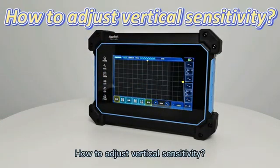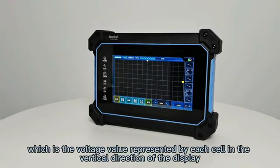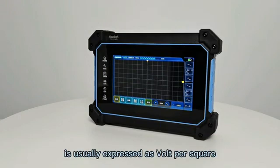How to adjust vertical sensitivity? The vertical tap, which is the voltage value represented by each cell in the vertical direction of the display, is usually expressed as volt per square.